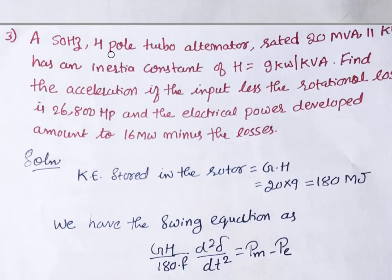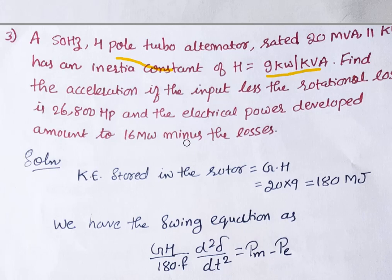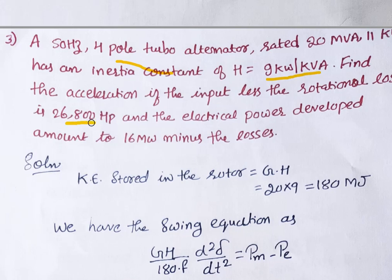The third problem: a 50 Hz, 4-pole turbo alternator rated 20 MVA has an inertia constant H = 9 kW per kVA (equivalent to megajoules per MVA). Find the acceleration if the input less rotational losses is 26,800 HP, and the electrical power developed amounts to 16 megawatt. Here, 26,800 HP is the mechanical input power and 16 MW is the electrical power developed by electromagnetic torque.